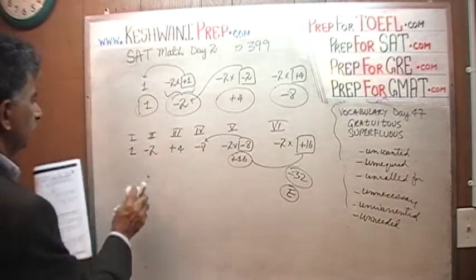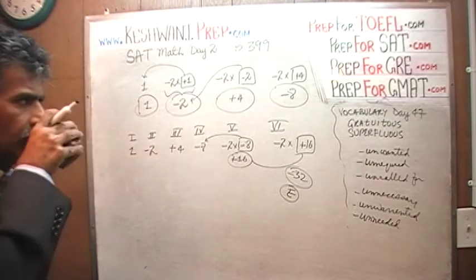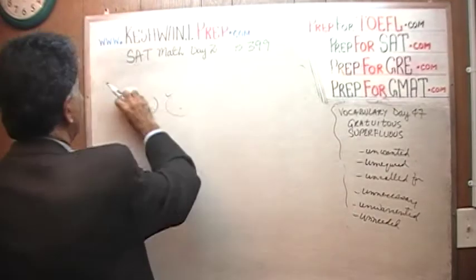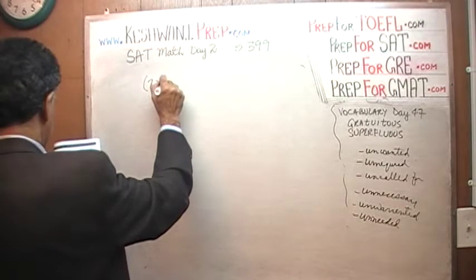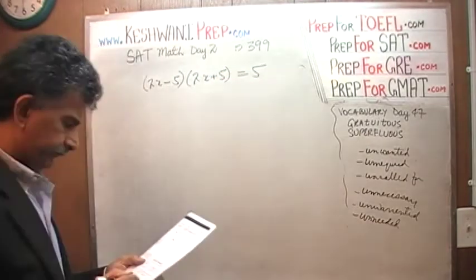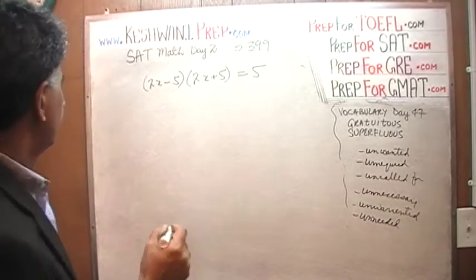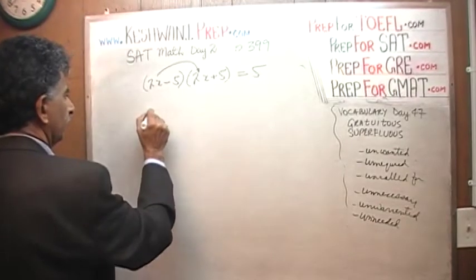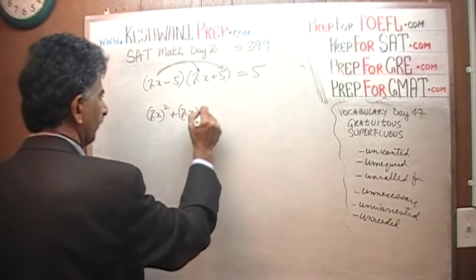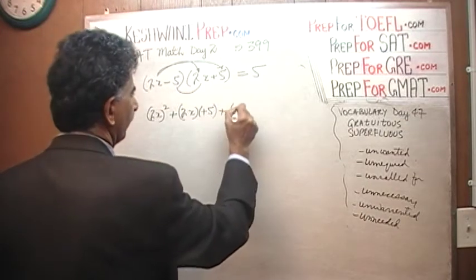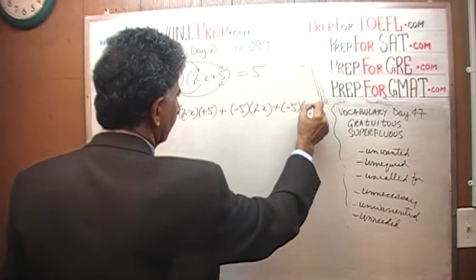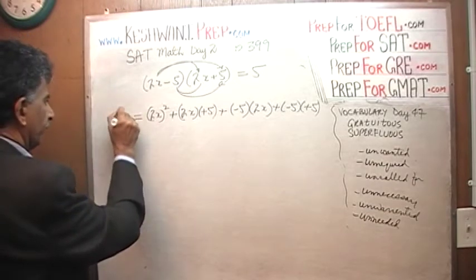Let's do the last one on the page, number 14. 2x minus 5 times 2x plus 5 equals 5. So the very first thing we should do is open this parenthesis and see what happens. 2x times 2x is 4x squared. Then we have 2x times positive 5. Then we are going to have negative 5 times 2x. And then finally we are going to have negative 5 times positive 5. And all of that, we are told, equals 5.